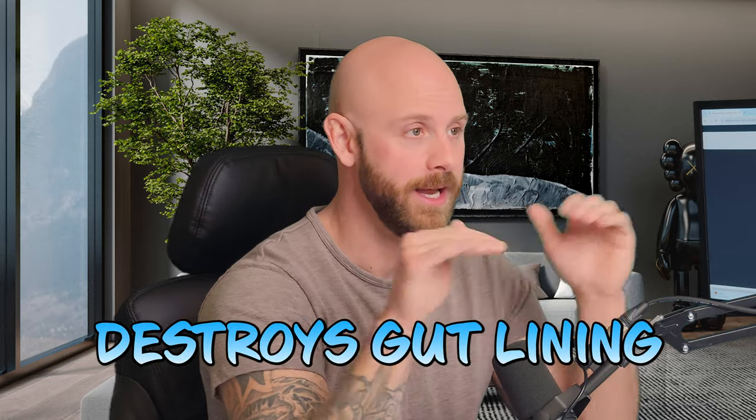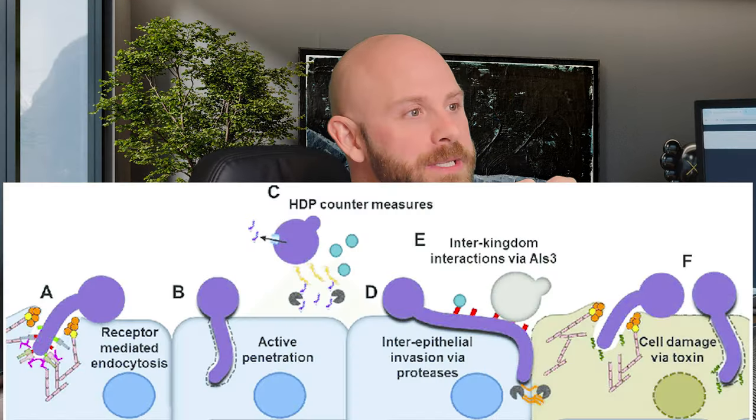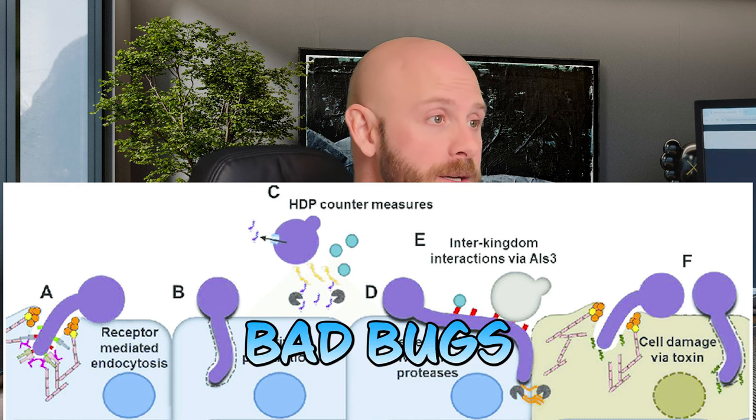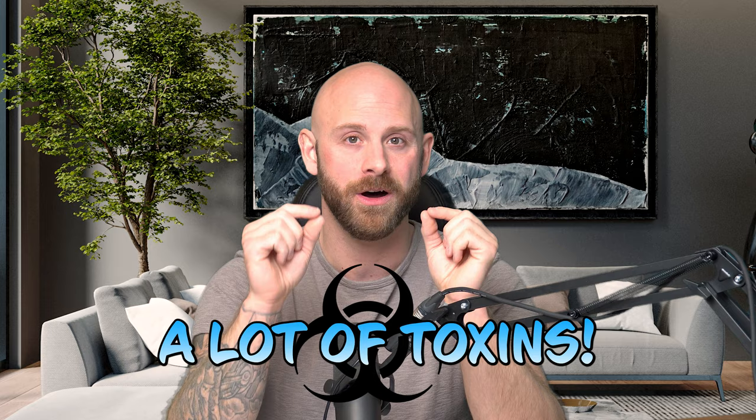Another big issue with candida is it really destroys the gut lining — this is where we hear things about leaky gut. Not only do we have the gut lining disintegration, but think of it as candida planting roots, and these roots act as transporters for other bad bugs. This is where we can see an increase of opportunistic bacteria overgrowth within the GI tract, contributing to more inflammation and more toxins produced.